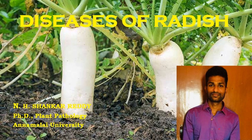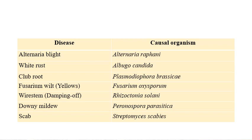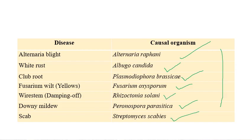Diseases of radish — we will see the list of important diseases in radish. My name is Ennit Shankar Reddy and I am doing a PhD in plant pathology at Anomaly University. The important diseases are: Alternaria blight caused by Alternaria rafani, white rust caused by Albugo candida, club root caused by Plasmodiophora brassicae, Fusarium wilt or yellows caused by Fusarium oxysporum, wire stem or damping off caused by Rhizoctonia solani, downy mildew caused by Peronospora parasitica, and the bacterial disease scab caused by Streptomyces scabies. Now we'll see each one in detail.